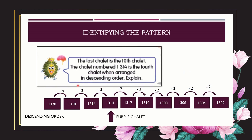Now look at this question. We use the same method: identifying the pattern. The shelly number 1314 is the fourth shelly when arranged in ascending order — explain. The key word is 1314, which is in the fourth position. Since we need descending order, we start from the big numbers down to small. The fourth number in this sequence is 1340.